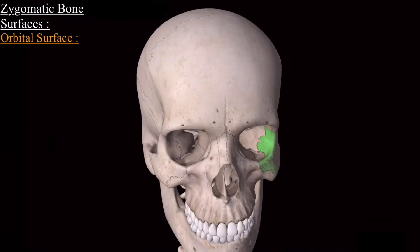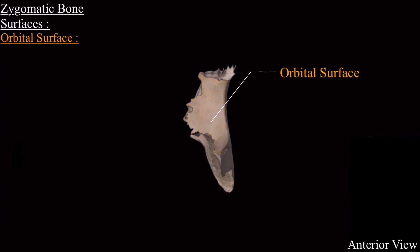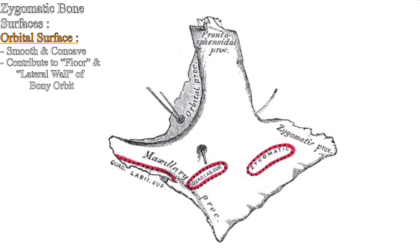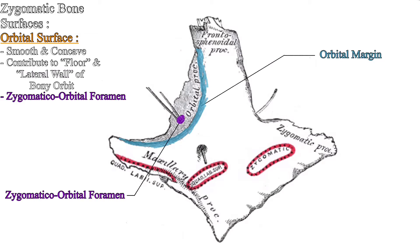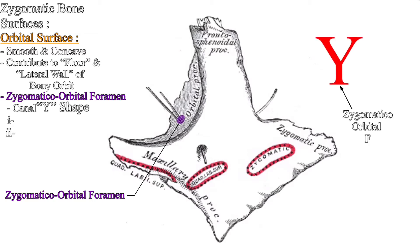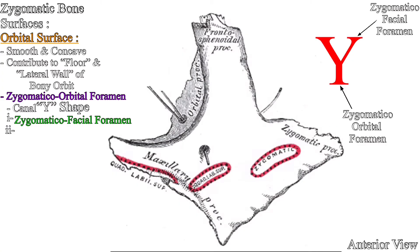Next is the orbital surface, which is smooth and concave, forming the floor and lateral wall of the bony orbit. On the orbital surface, below the orbital margin, a foramen called the zygomatico-orbital foramen is present. This foramen is actually a Y-shaped canal leading to two openings: one on the lateral surface as the zygomaticofacial foramen, and one on the posterior surface as the zygomaticotemporal foramen.